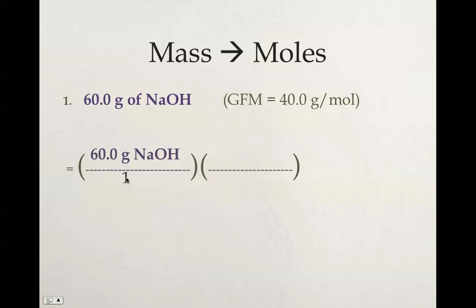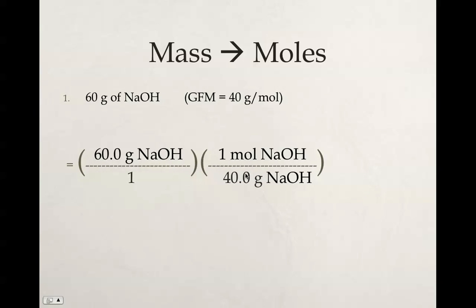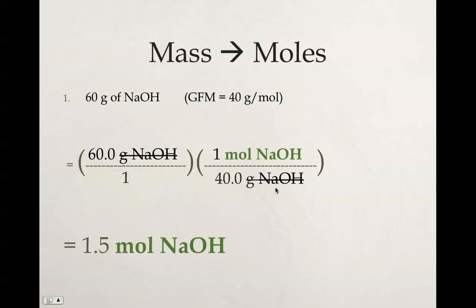We always start with what we're given. I'm simply placing it over 1. My given is the 60 grams of NaOH. The grams of NaOH then need to go in the denominator, which comes from my GFM, so 40 grams of NaOH. My units are matching up diagonally, equal to 1 mole of NaOH. These two things are equal to each other. We're using moles over the GFM because we started off with grams. We need grams in the denominator of our equality. Those units can be canceled out, and our answer will be 60 times 1 divided by 40, which gives us 1.5 moles of NaOH.